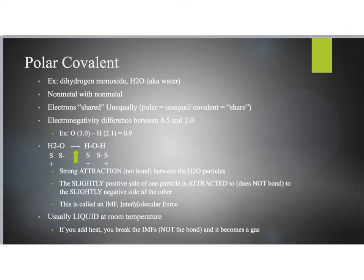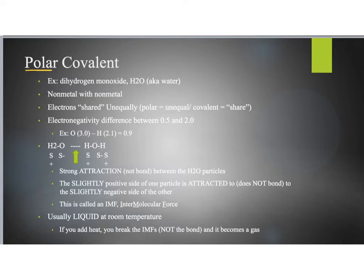Now let's take a look at covalent compounds. Covalent compounds are non-metals with non-metals — we're working on just the right-hand side of that staircase on our periodic table. There are actually two different types of covalent compounds: we have polar covalent and then non-polar covalent. Polar covalent means that even though those electrons are shared, they're shared unequally, so one of the atoms is pulling on those electrons more than the other.